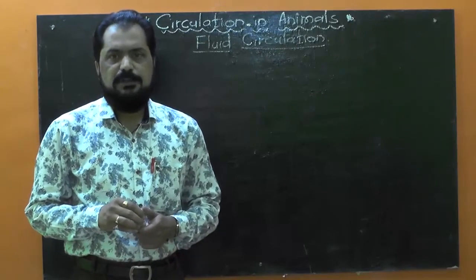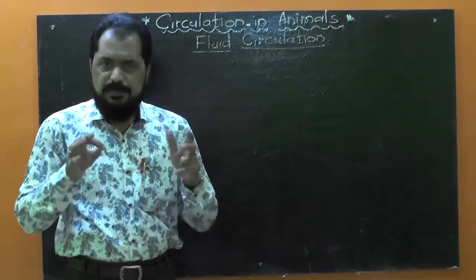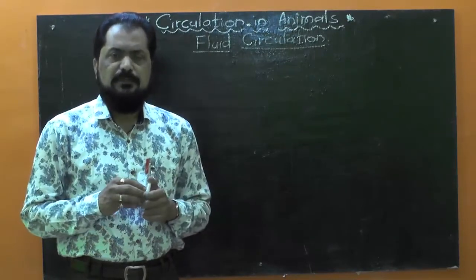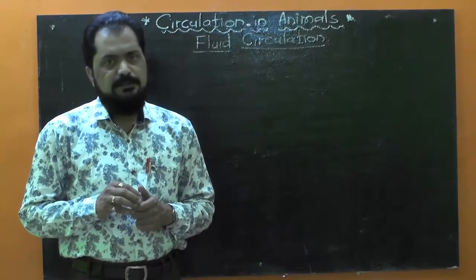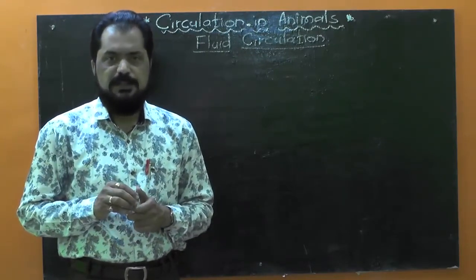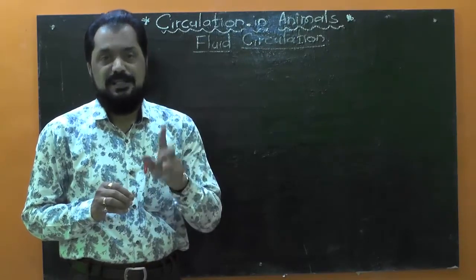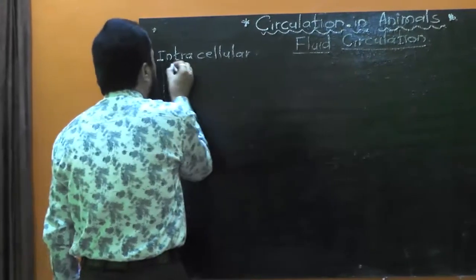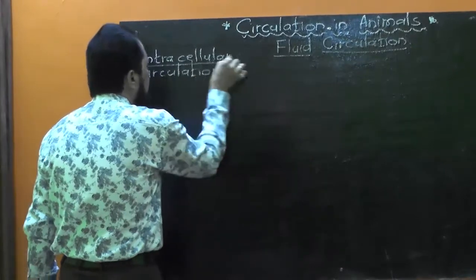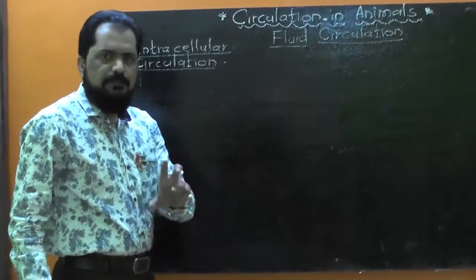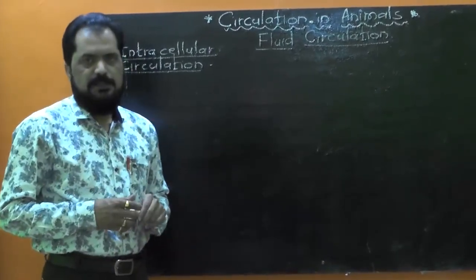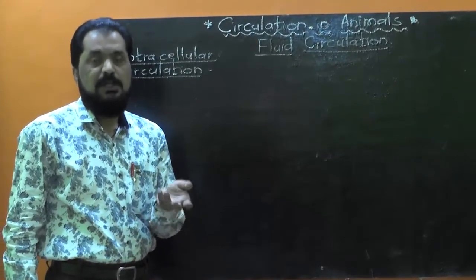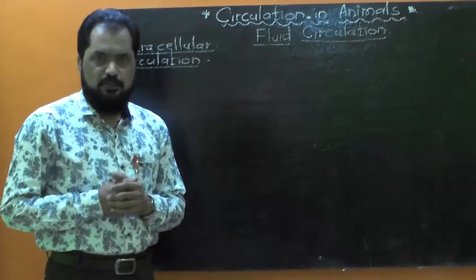This fluid circulation is of many different types in animals, but basically there are two main types of fluid circulation. The first is intracellular circulation and the second is extracellular circulation. Let me first tell you about intracellular circulation. The name itself indicates: 'intra' stands for inside, 'cellular' stands for cell, and 'circulation' stands for transportation or distribution.